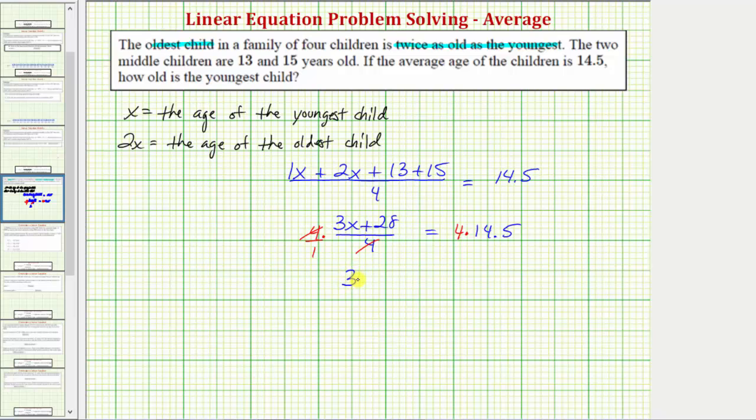Now we just have 3x plus 28 equals four times 14.5 is equal to 58. Isolating the variable term, we subtract 28 on both sides.